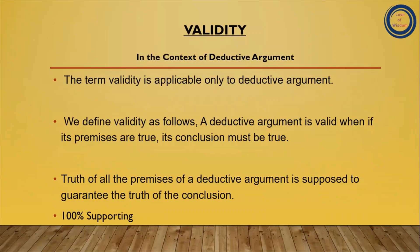Ek deductive argument tab valid hota hai jab uski sari premises true hon aur uska conclusion bhi true ho. As I said in the last video, the conclusion is already inherent in the premises. Deductive argument mein premises aur conclusion ke beech necessary relation hota hai. So it is understood if all the premises are true, the conclusion must be true.